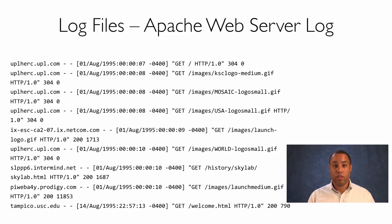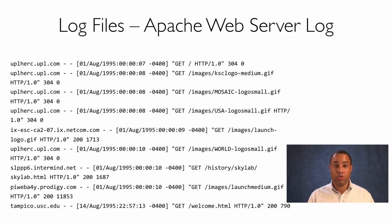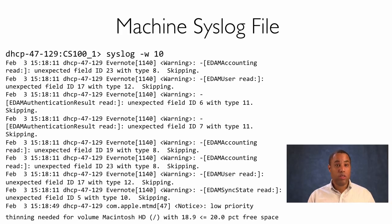Another source of big data is log files — files generated by servers around the Internet. Here's an example of an Apache web server log, which records every click. Every time your web browser makes a request to a web server, that gets recorded in a log file. Later in this class, we're actually going to look at a log file and you'll perform some analysis on it using Spark. There are also machine log files — with hundreds of millions of machines, each generating logs of applications that run, errors in those applications, and operating system processes.